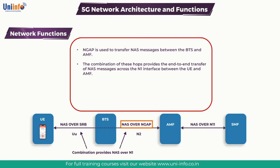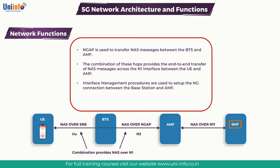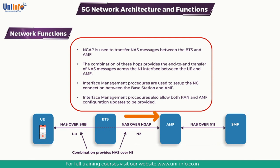The combination of NAS and N-GAP signaling is shown in the figure on screen, which also illustrates a subset of NAS messages being transferred to and from the SMF. Interface management procedures are used to set up the NG connection between the base station and AMF — both the N1 and N2 interfaces use this NG connection. Interface management procedures also allow both RAN and AMF configuration updates; for example, the RAN configuration update allows the base station to inform the AMF of changes to supported PLMN and tracking areas. Configuration transfer procedures allow the base station and AMF to exchange information related to Self-Optimization Networks (SON), for example to support automatic neighbor relations. The end-to-end transfer could be between a pair of base stations, but information must be sent via the AMF if no Xn interface exists between them.